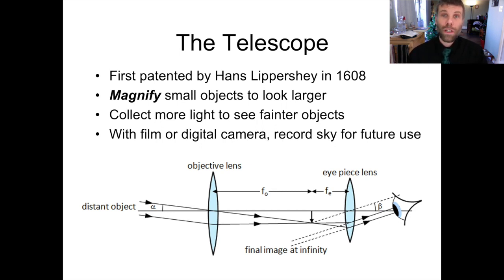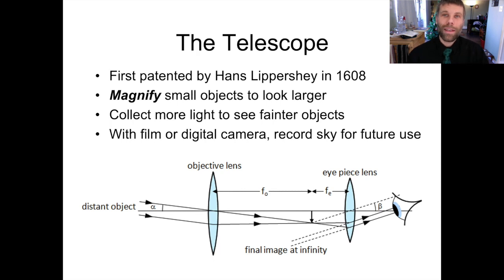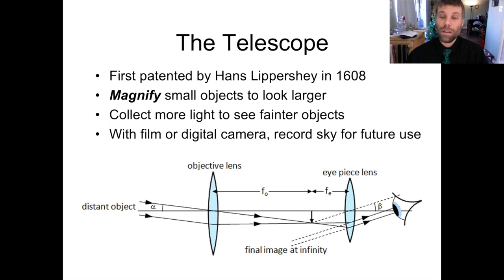The first telescope, as far as we know, was built and patented by a Dutch spectacle maker, or eyeglass maker, by the name of Hans Lippershey in 1608. And a little bit later, Galileo built his own version of the telescope that he then used to study the sky.